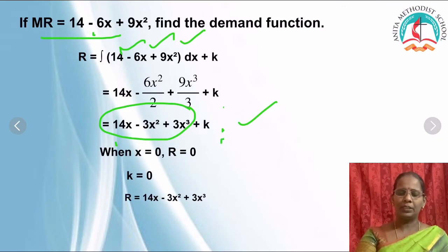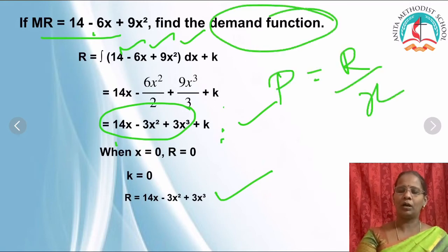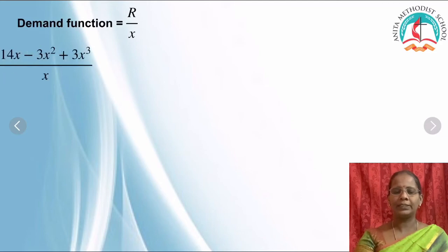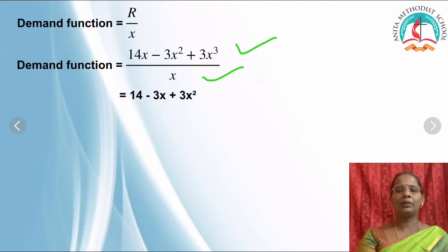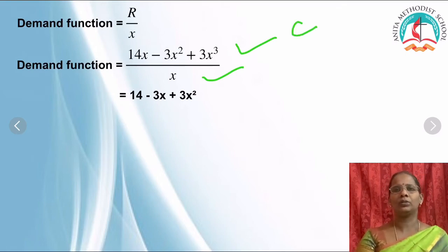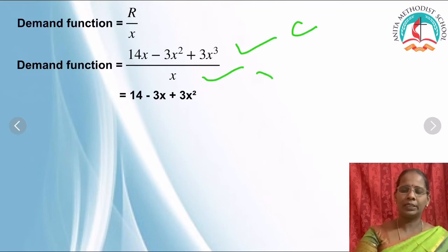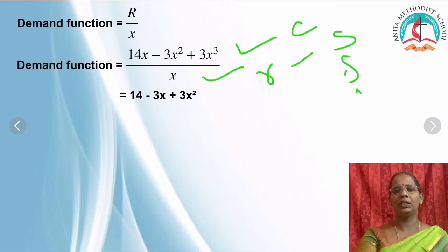Integrating the marginal revenue gives R = 14x - 3x² + 3x³ + k. Applying condition x = 0, R = 0 gives k = 0. So R = 14x - 3x² + 3x³. For the demand function, use p = R/x. Divide revenue by x: p = 14 - 3x + 3x². The same procedure applies for cost and profit; only the integration formula differs.